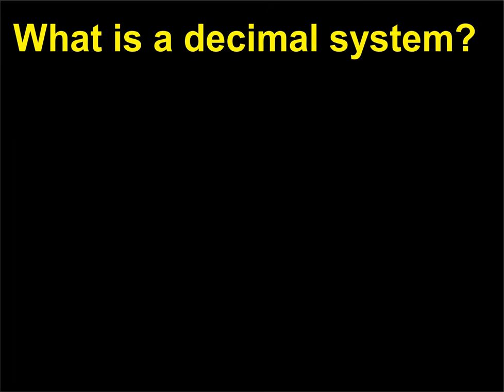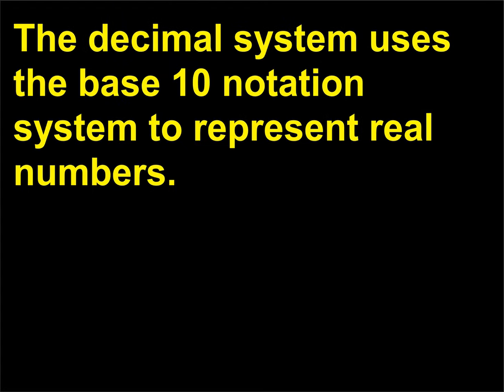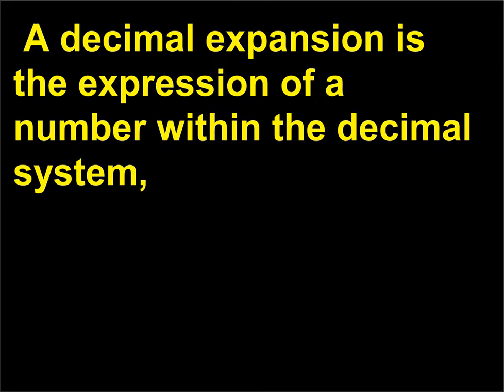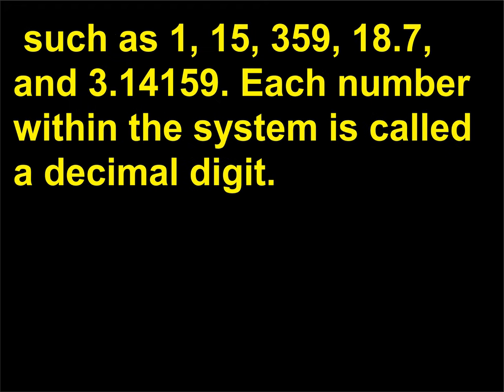What is a decimal system? The decimal system uses the base 10 notation system to represent real numbers. A decimal expansion is the expression of a number within the decimal system, such as 1, 15, 300, and 59, 18.7, and 3.14159. Each number within the system is called a decimal digit.